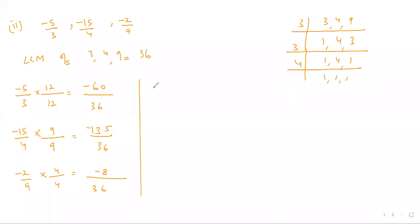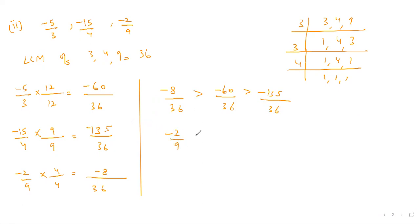Now arranging the numbers: the largest is −8/36, then −60/36, and the smallest is −135/36. Writing back in original form: −2/9 is the greatest, −5/3 is smaller, and −15/4 is the smallest. So that was all about Part 2 of Question Number 8.